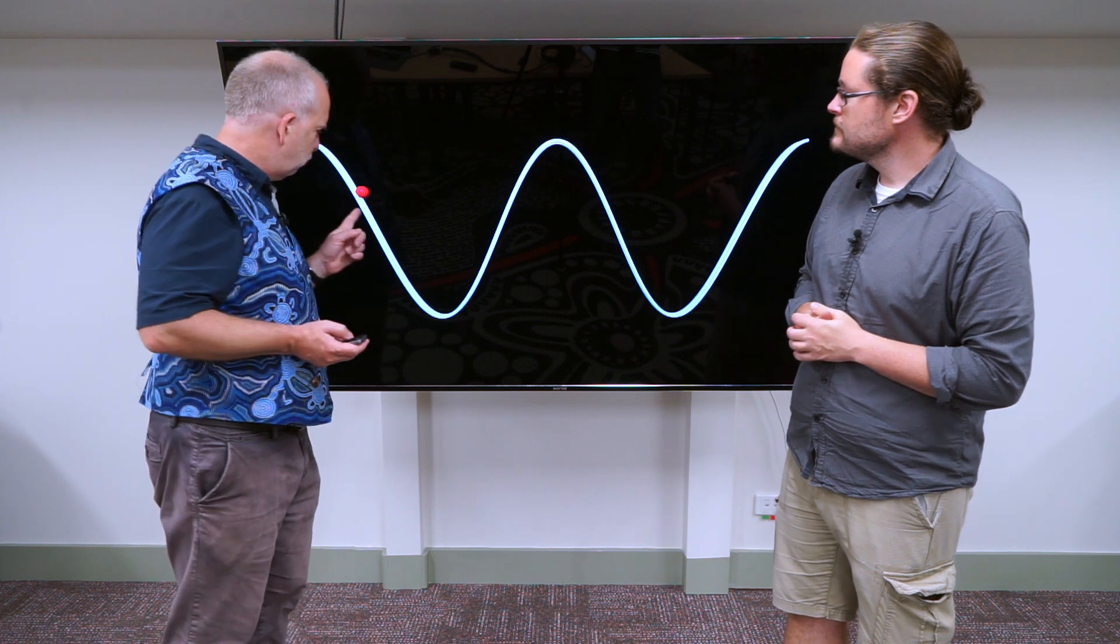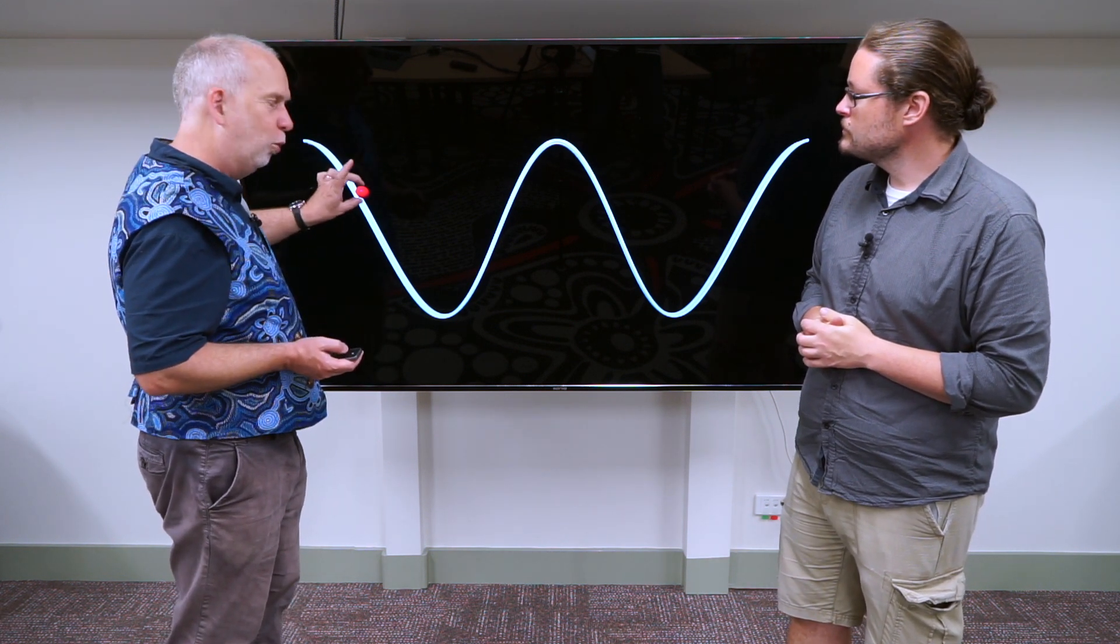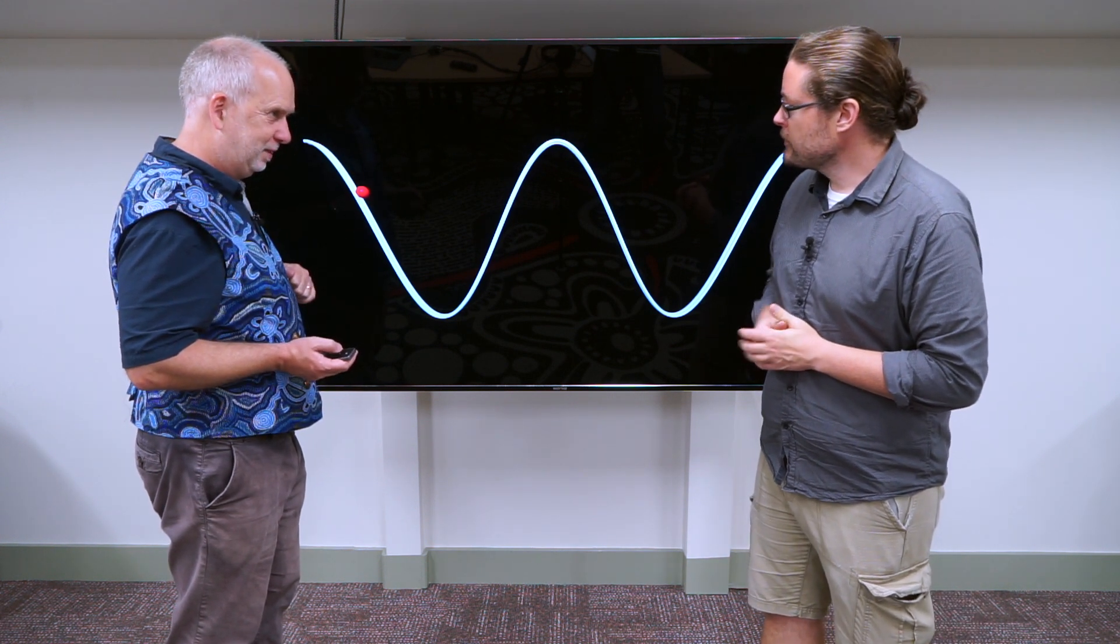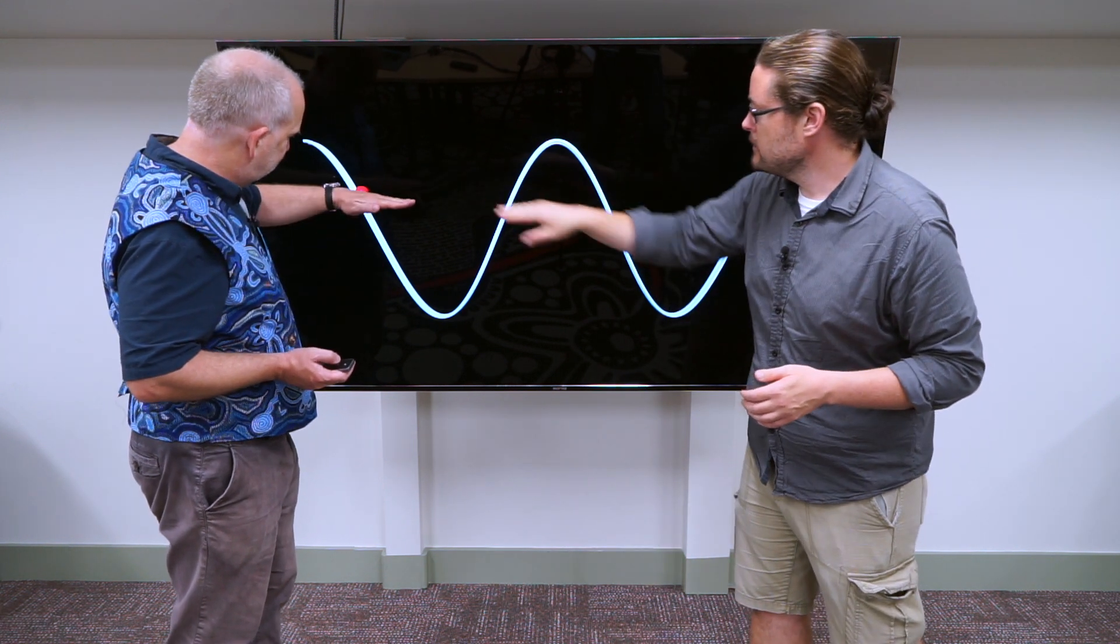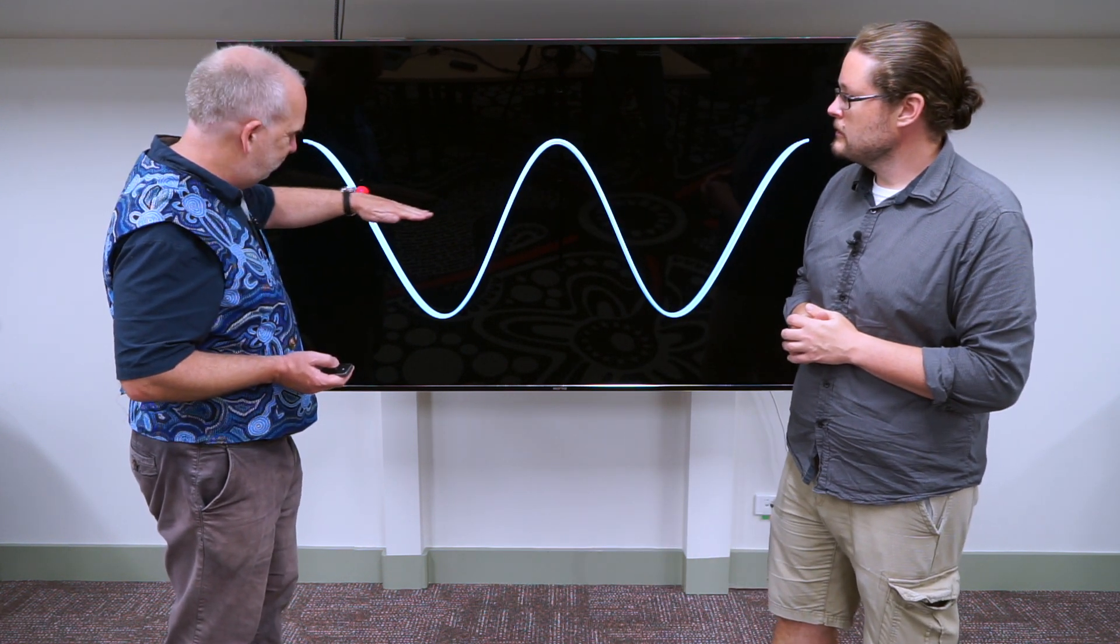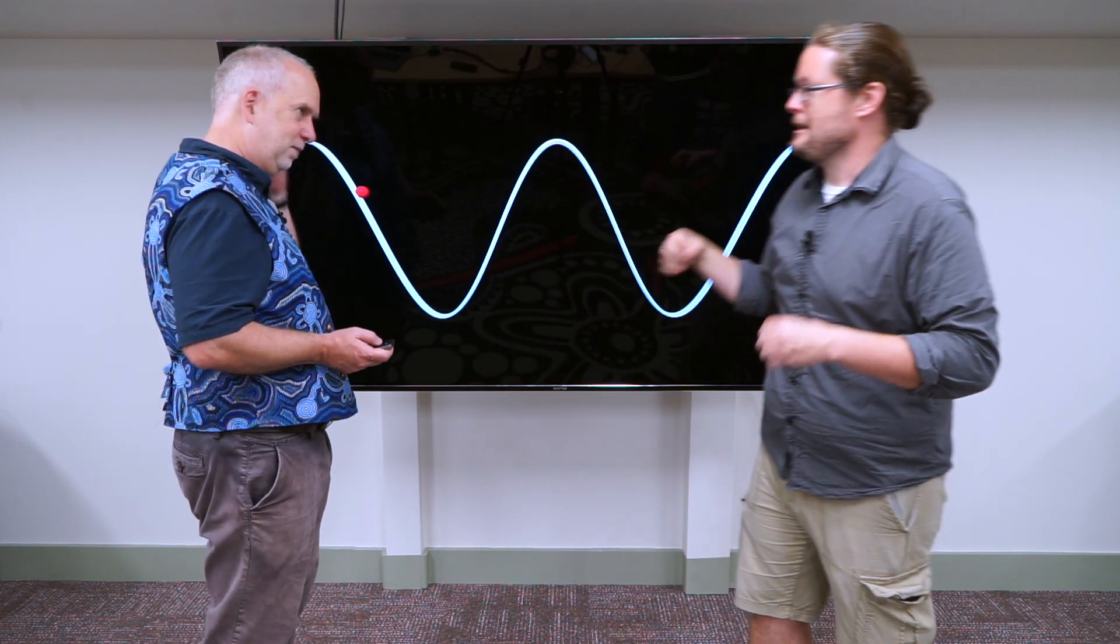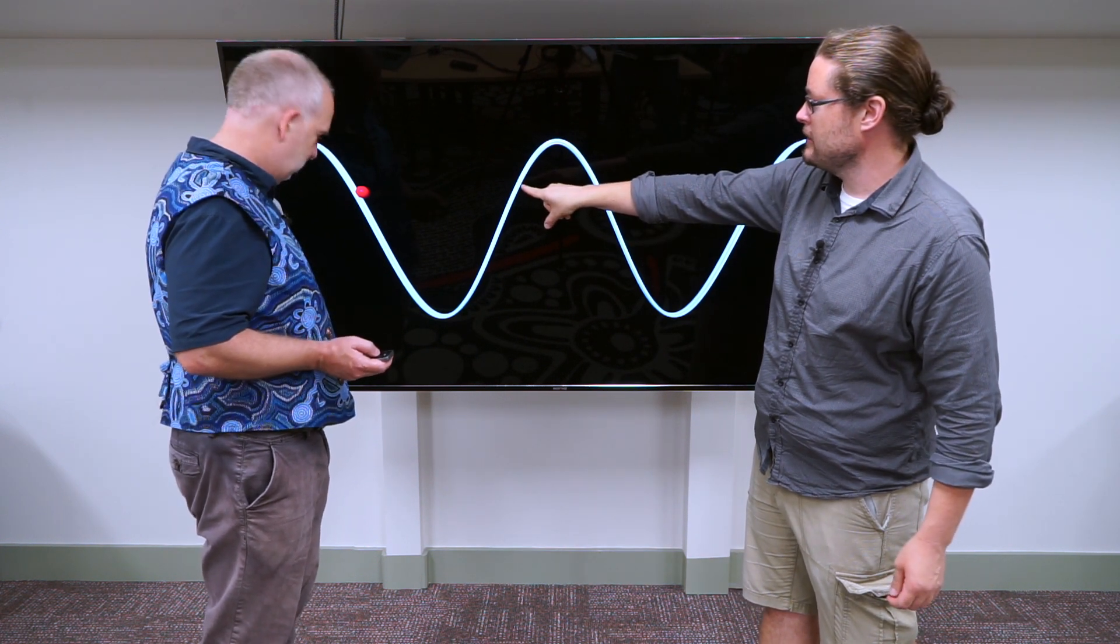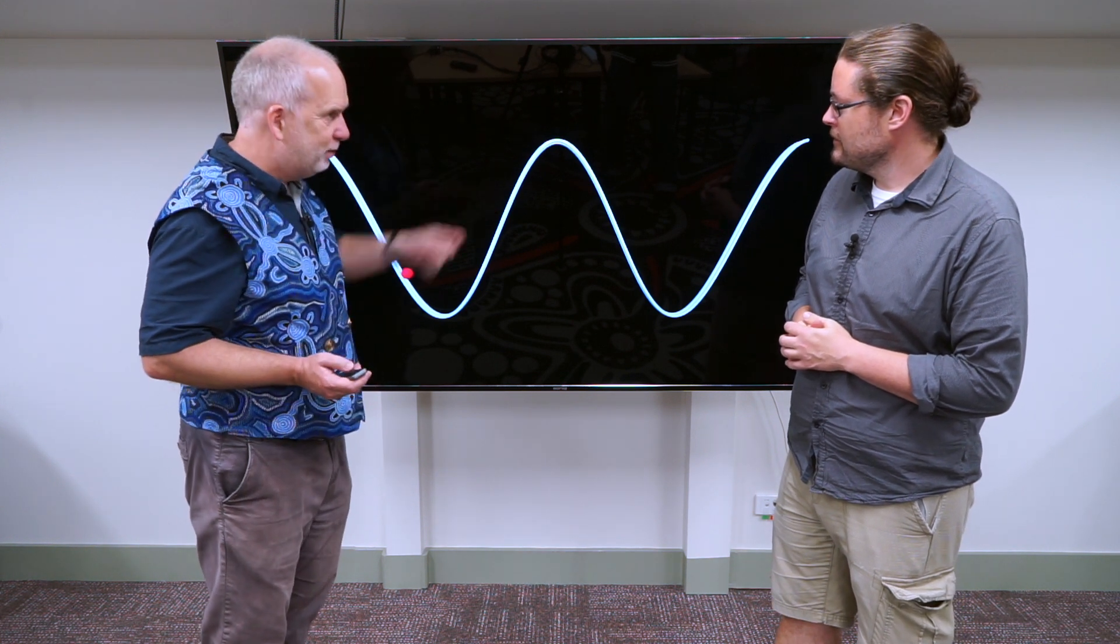But now what would happen if we started only here? So if you started at rest there, let's say I just took this ball and let go. Where's the energy level going to be? Well, it's going to have to be here, right? There's no kinetic energy because you're letting it go stationary, so the energy level's going to be there. So what's it going to do? Yeah, so this is going to be interesting, because if we can't get more than our total energy, we're going to run out of energy right here. Well, let's see.